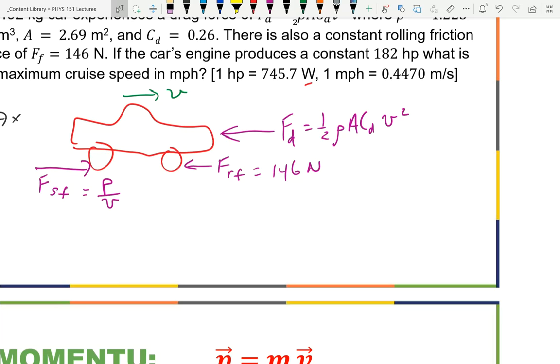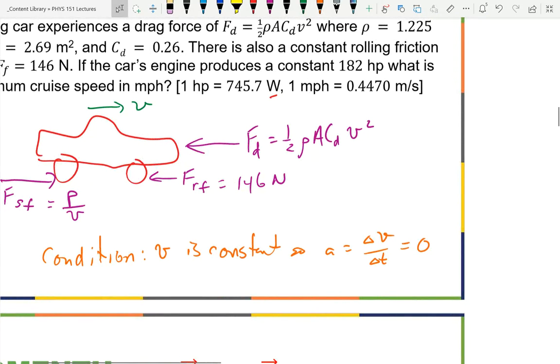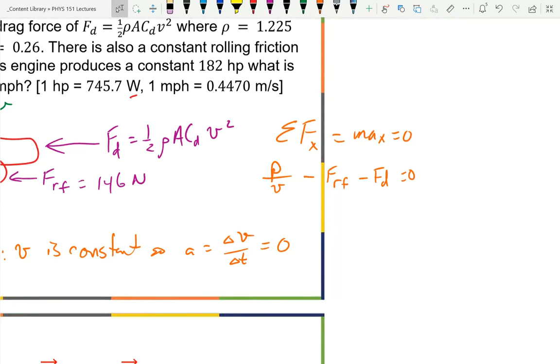So what's the condition for the cruising speed? The acceleration is not only constant, it's zero because the velocity is constant. Since it's straightforward, I didn't worry about vector signs. Obviously going in a circle you'd have an acceleration. And thus I'm just going to use Newton's second law. Sum of the forces in the x direction equals ma_x equals zero. And so I have forward the power divided by speed, backward the force of rolling friction, the force of drag. And so now I need to solve this for speed.